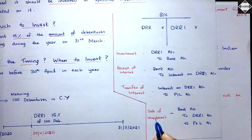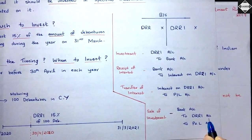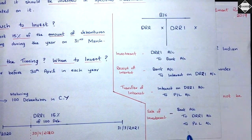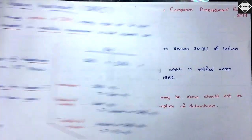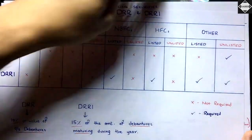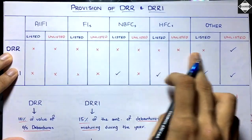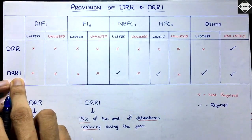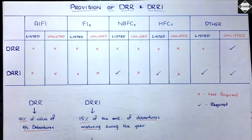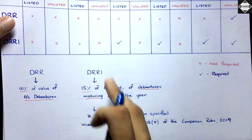At the time of redemption, you sell the DRRI investment: Bank Account debit, DRRI Account credit, with any profit or loss going to Profit and Loss Account. Regarding adequacy: for DRR, certain companies such as listed companies have no requirement; for other unlisted companies DRR is required. For DRRI, the requirement applies to NBFCs listed, HFCs listed, and other listed as well as unlisted companies. The amount is 10% of outstanding debentures for DRR and 15% of debentures maturing in the current year for DRRI.